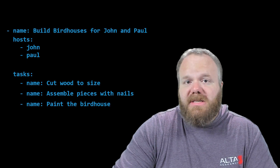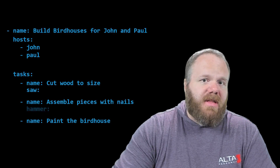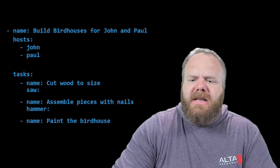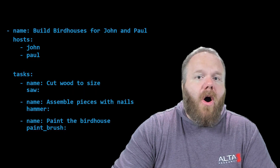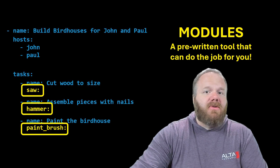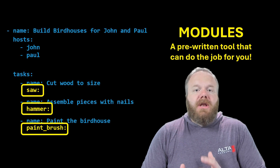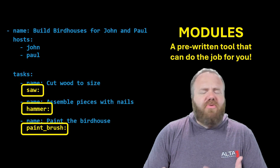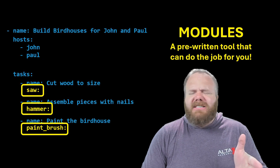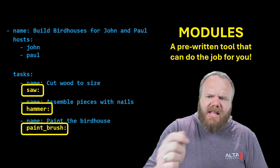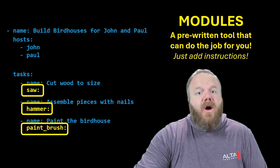For instance, if I need to cut wood to size, what tool do I need? A saw. If I want to assemble pieces with nails, that's a hammer. If I need to paint something, I'll reach for a paintbrush. What you're seeing here are what we would give as examples of modules. For every task there is going to be a module, and a module is a pre-written tool that can do the job for you. The saw has sawed a thousand times. The hammer knows exactly what it's doing. All that these modules need from you are instructions.